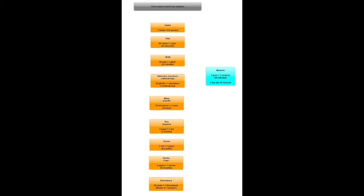30 days equals 1 month (masa), 2 months equals 1 season (ritu), 3 seasons equals 1 ayana which is 6 months, 2 ayana equals 1 year, 60 years equals 1 sambatsara.